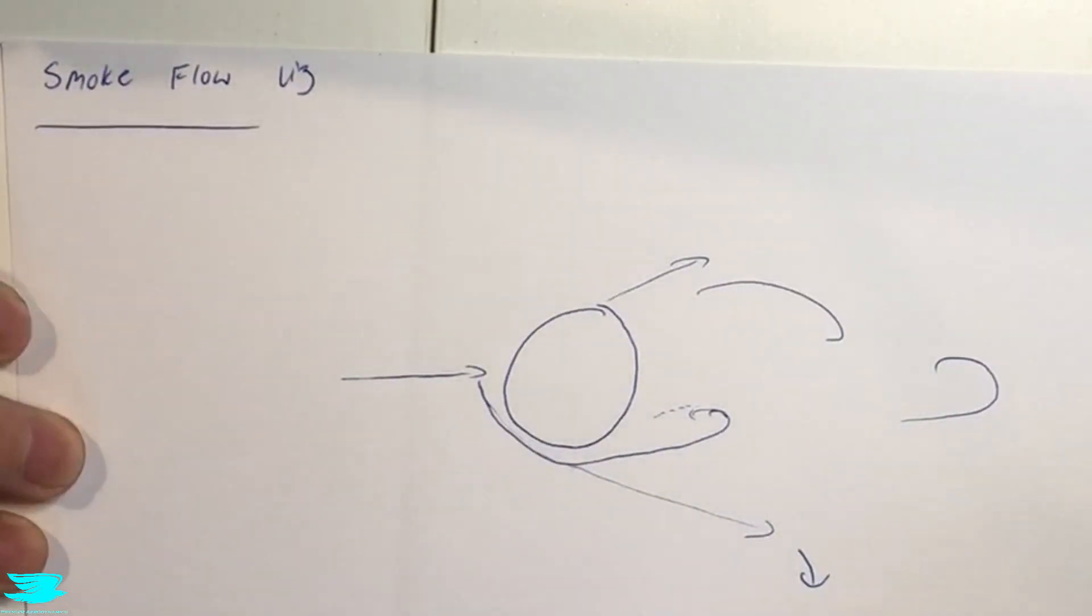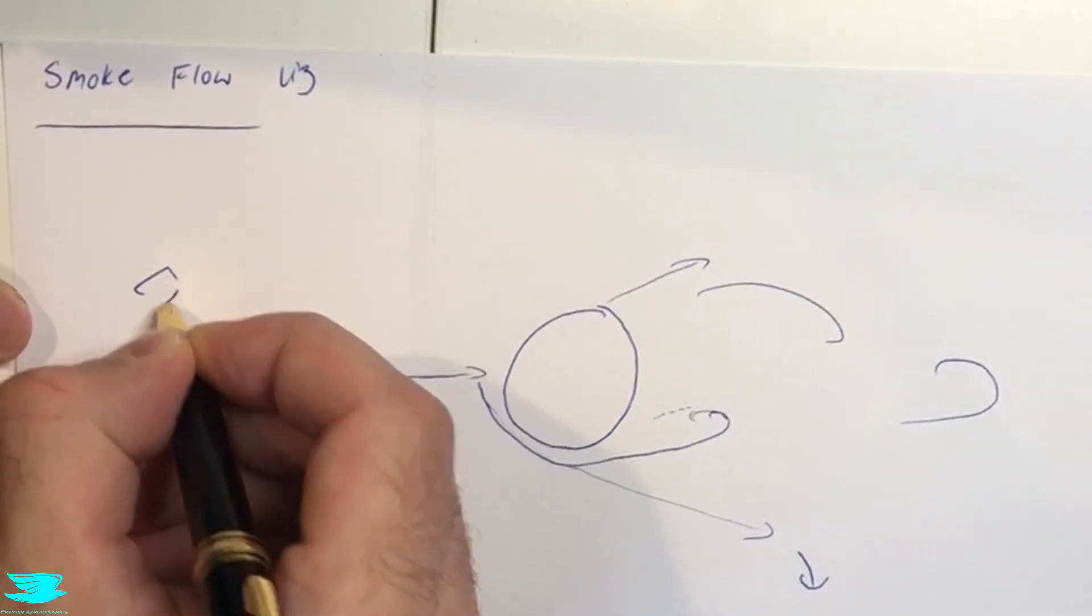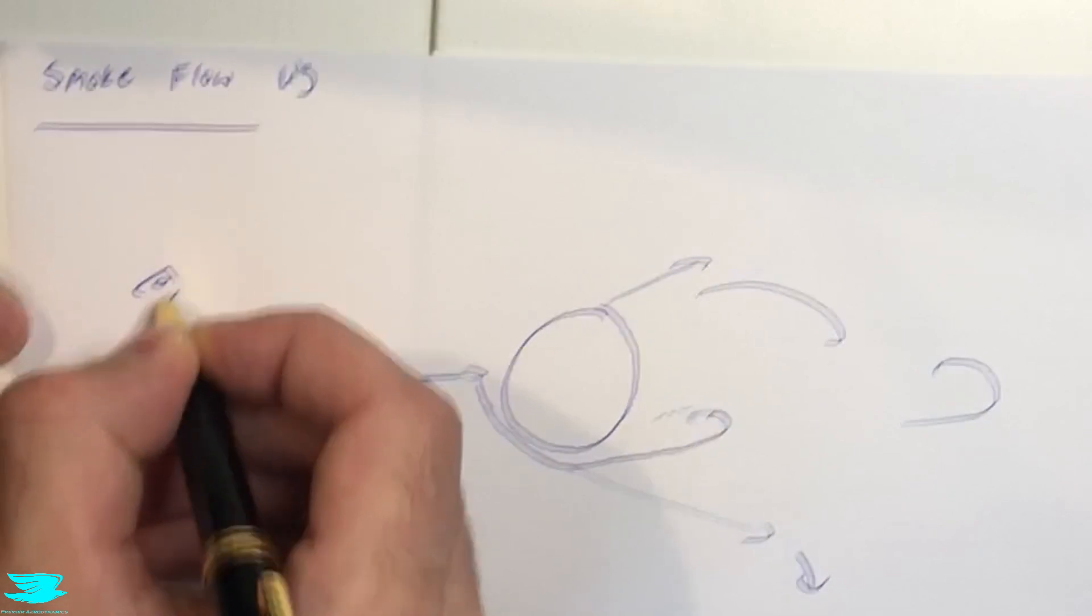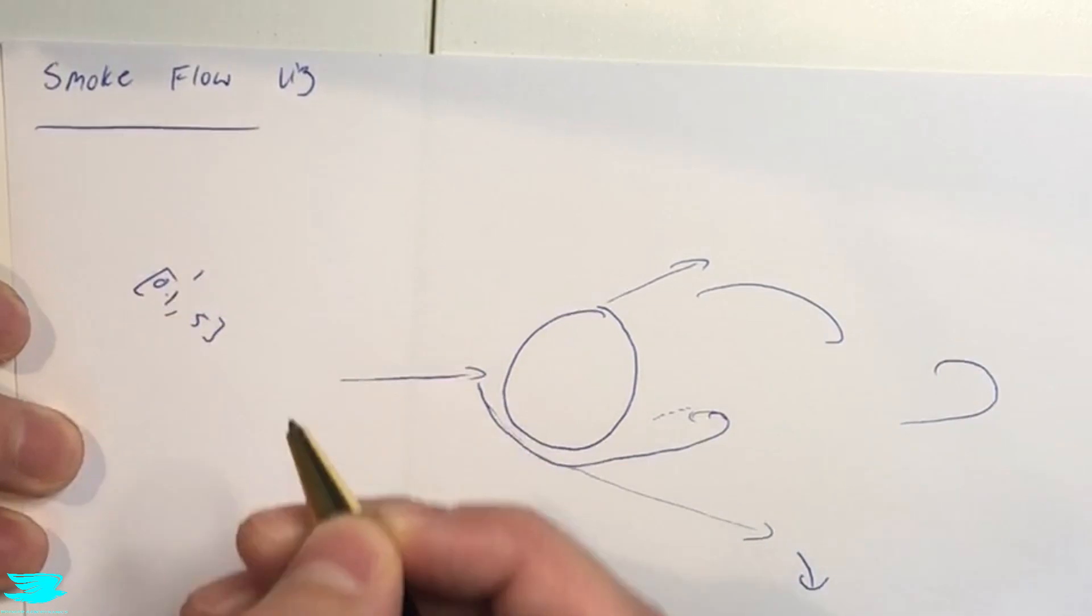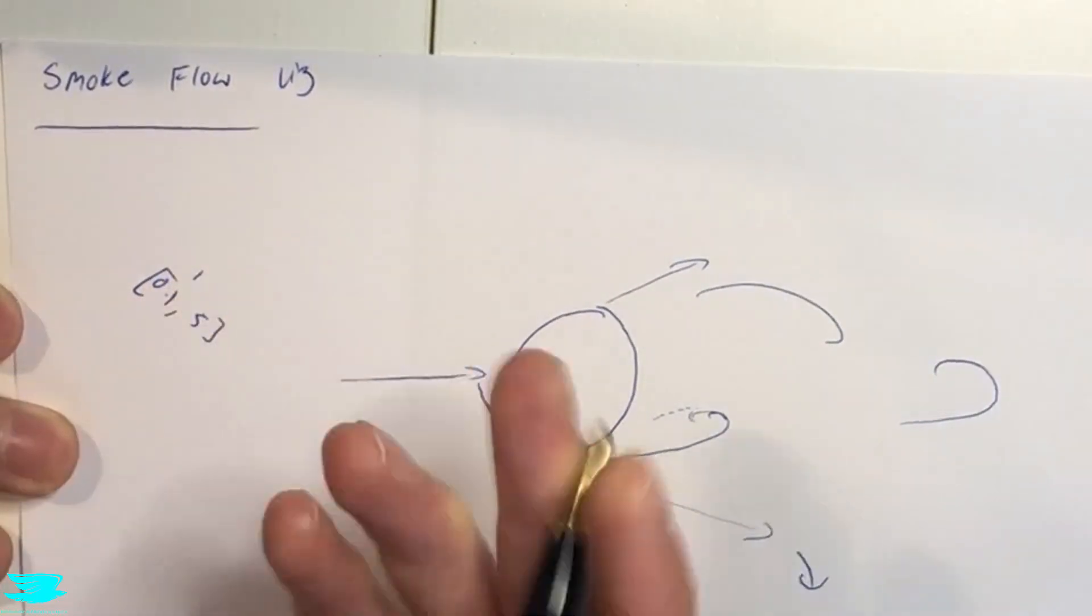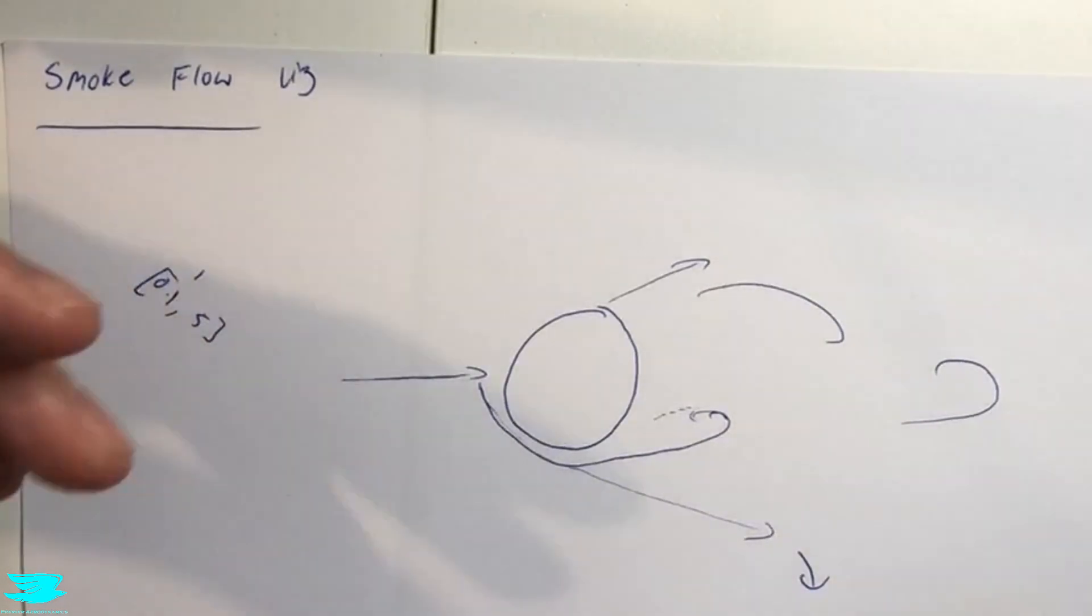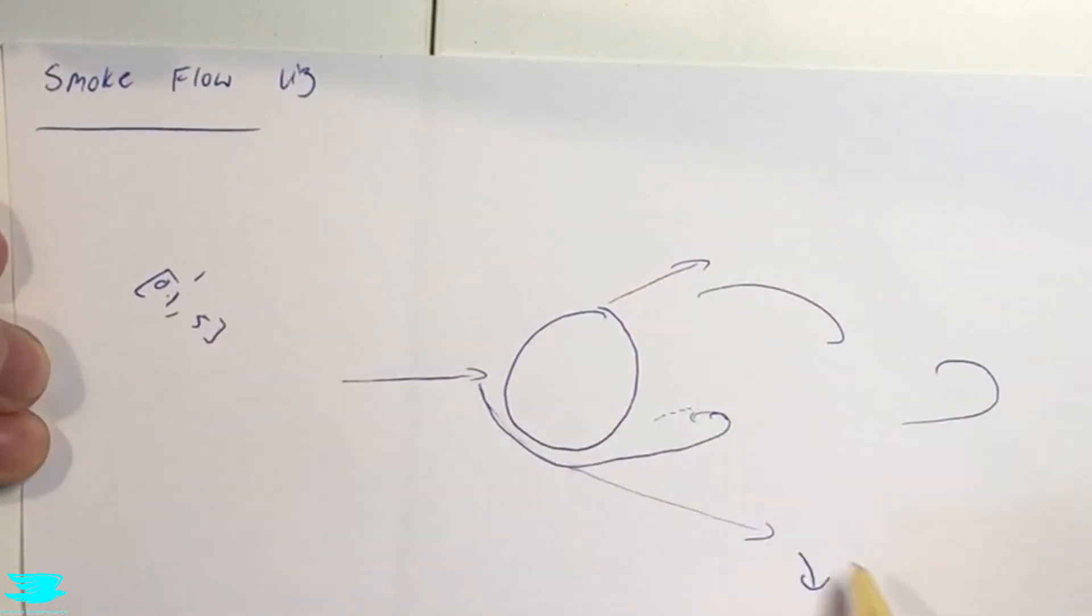Generally speaking, for smoke flow visualization and PIV as well, the size of particles you want to go for is from around 1 micron or even less, let's say 0.1 to 5 microns. About 1 is usually better, but 0.1 to 5. The reason is because if you go below 0.1, you're not going to get much illumination at all if you have a laser going through it. Above 5, the particles will start to fall out of the flow.